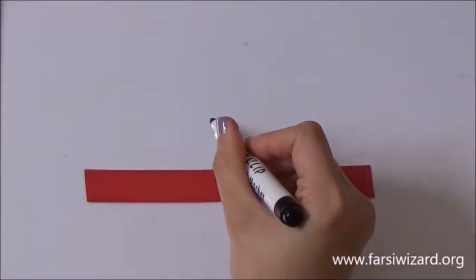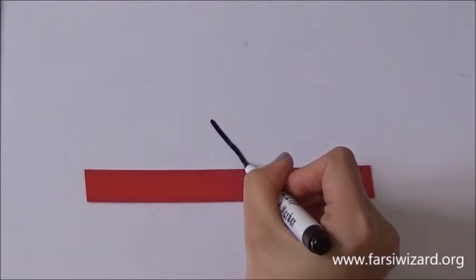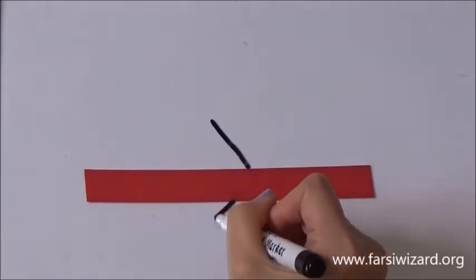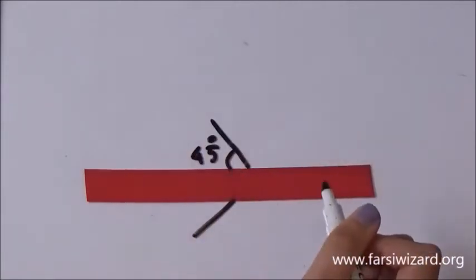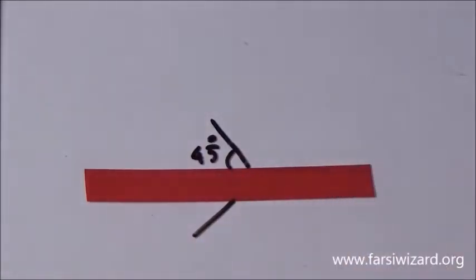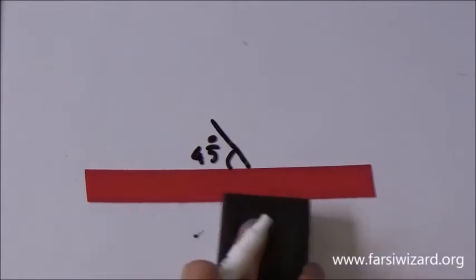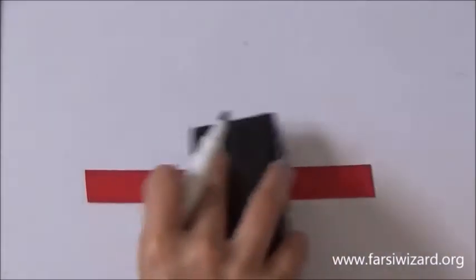Okay how do we write these letters? Pretty easy. This is how you will write DAL. 45 degrees above the line 45 degrees under the line. So it's kind of like a geometric shape very easy very symmetrical.